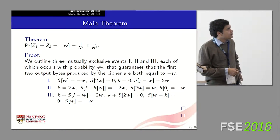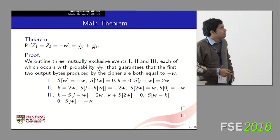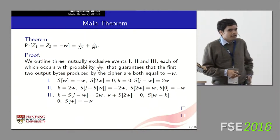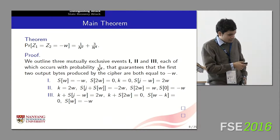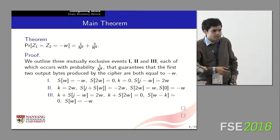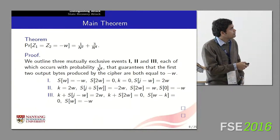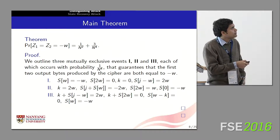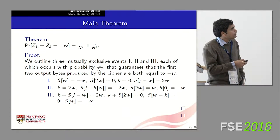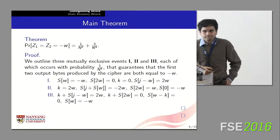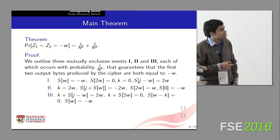We now come to one of the main theorems of the paper. We claim that the probability of the first two output bytes produced by Spritz both being equal to −W is 1/N² + 3/N⁴. So this event is slightly biased.